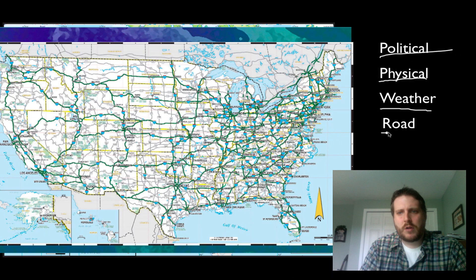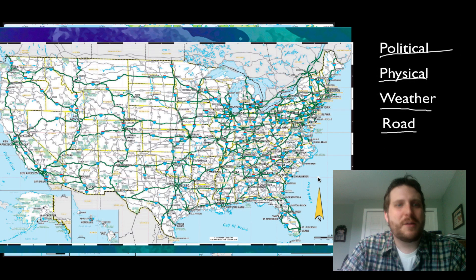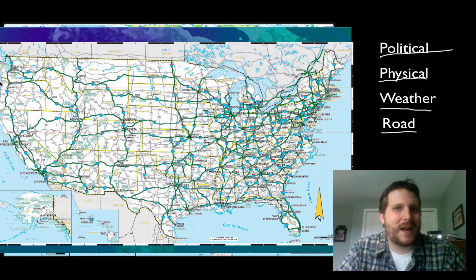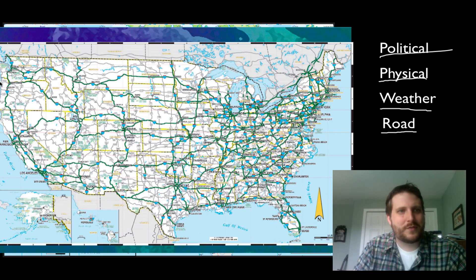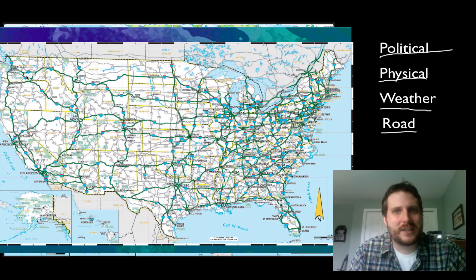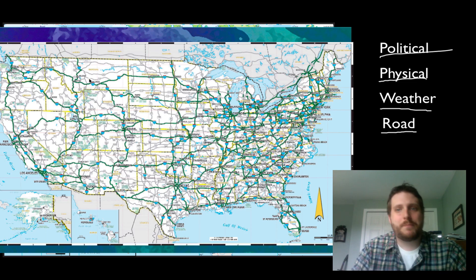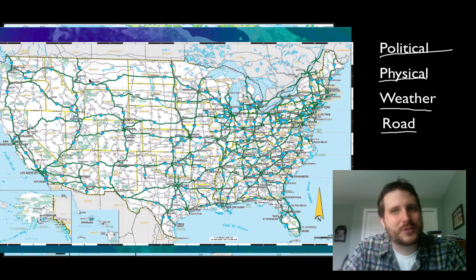We've also got road maps. Road maps show us where different roads are and can help us find directions. If you use Google Maps, you've seen a road map before. This is a map of different interstates in the United States — for example, I-5 goes all the way from Canada down to Mexico and can help you plan trips.